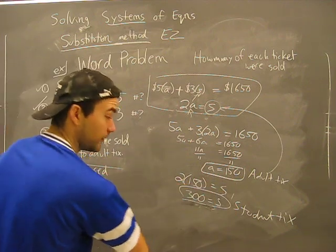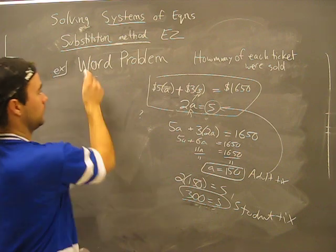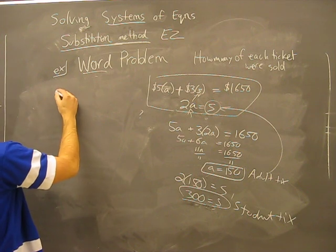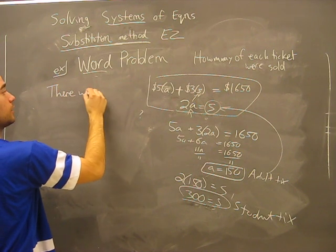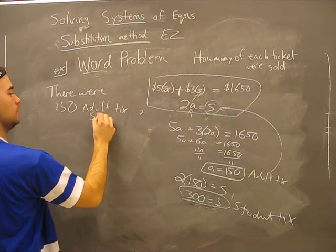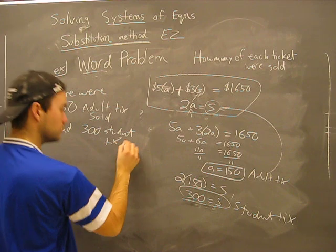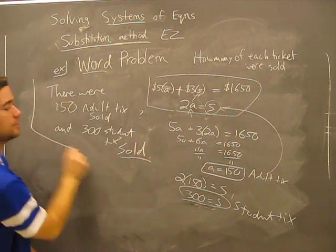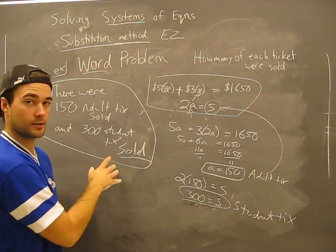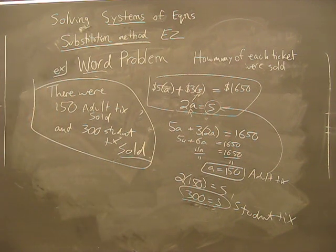What you need to finish up, any word problems will always demand a word answer. Make sense? You're going to have to say how many of each ticket were sold. This is your final answer right here. There were 150 adult tickets sold and 300 student tickets sold. This is your word answer. No word answer, no correcto. It needs a word answer. Any questions? Give me all of them.